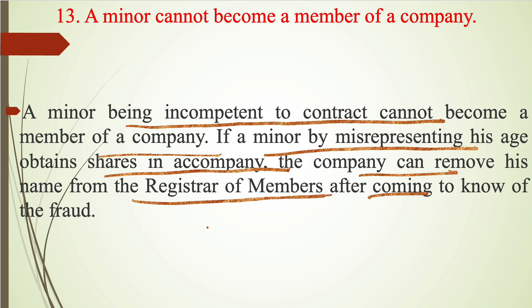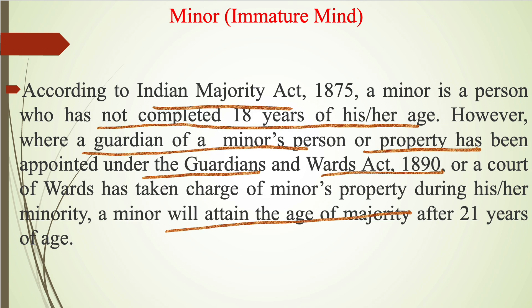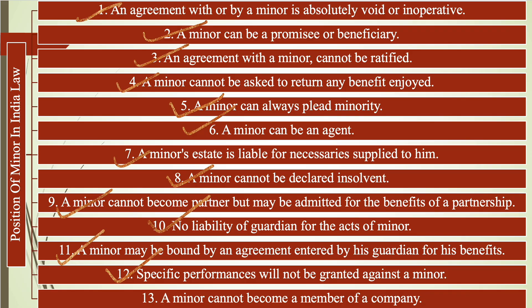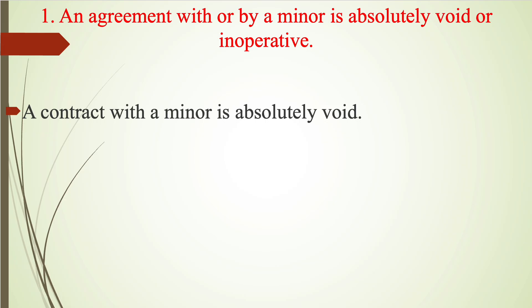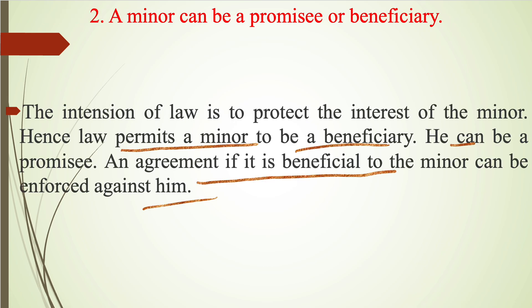To summarize, a minor is a person who has not completed 18 years of age. A minor is not capable of doing a contract — any such contract is void. A minor can be a promisee or beneficiary, and the law permits him to become a beneficiary to protect his interests.